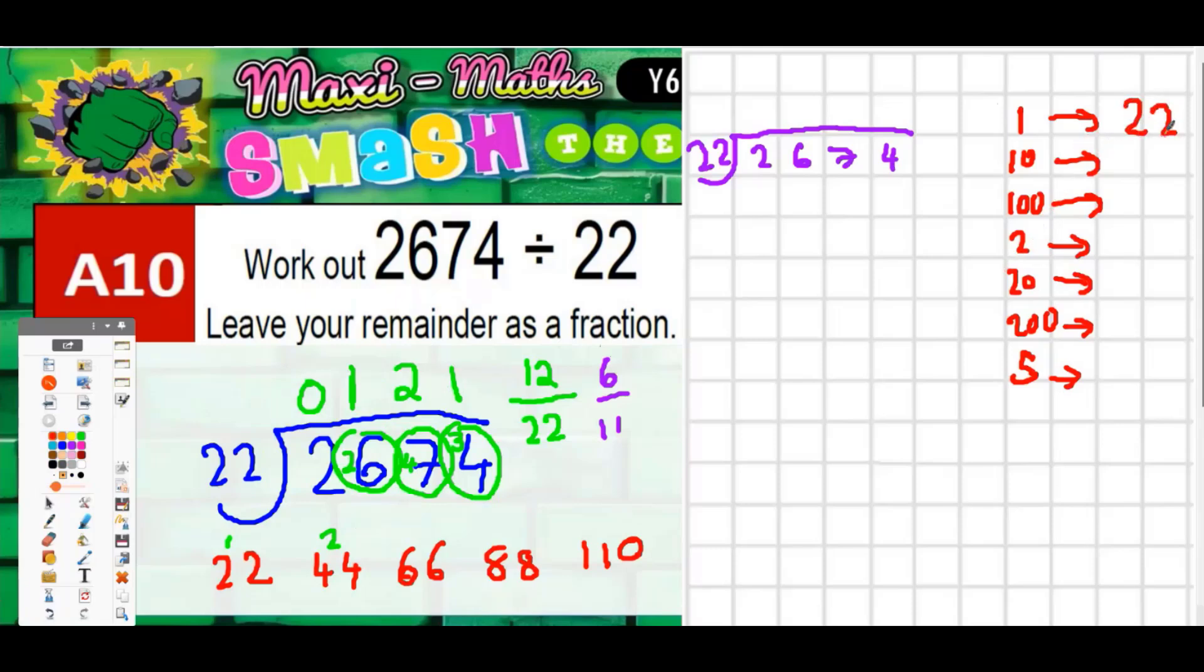So 1×22 is 22, chunk of 10×22 is 220, 100 is 2200, 2×22 is 44, 20×22 is 440, 200×22 is 4400, 5×22 is half of 10×22 so it's going to be half of 220 which is going to be 110. And now what we do is we subtract the biggest chunk we can to get as low as we can as quickly as we can.